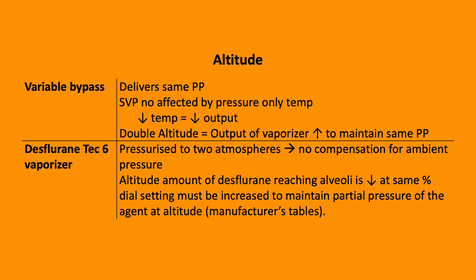Altitude and vaporizers: variable bypass vaporizers always deliver the same partial pressure, so theoretically they shouldn't be affected by altitude. However, there is a reduction in temperature at high altitude which reduces output — so if altitude doubles, the output increases to maintain the same partial pressure. This is different for the TEC6 vaporizer for desflurane. These are pressurized to two atmospheres with no compensation for ambient pressure. At altitude, the amount of desflurane reaching the alveoli reduces at the same percentage, so the dial must be adjusted to increase the concentration, and there are manufacturer tables to guide this.